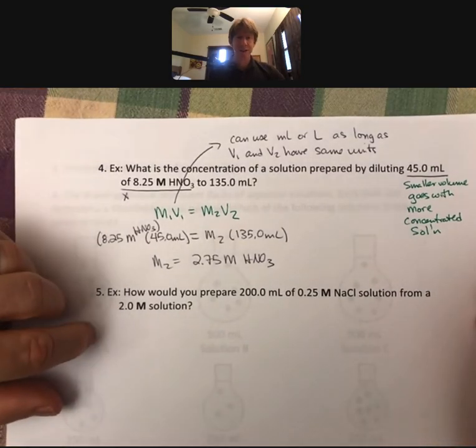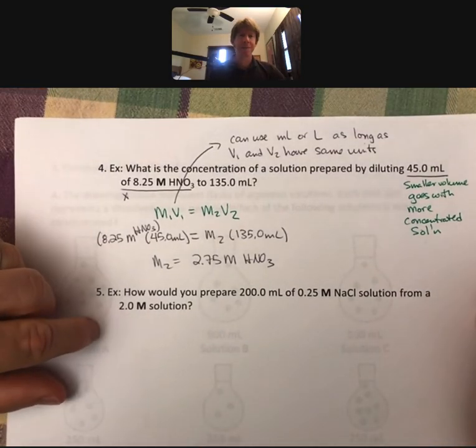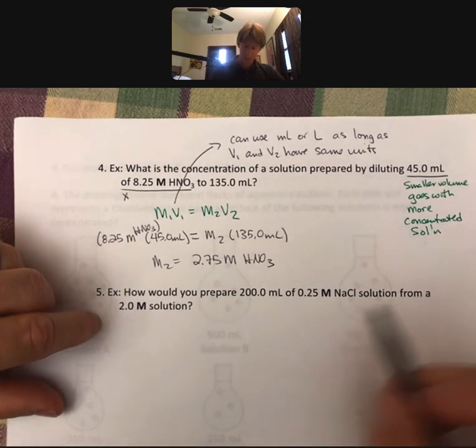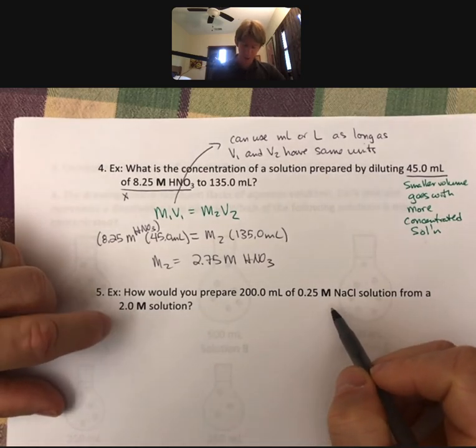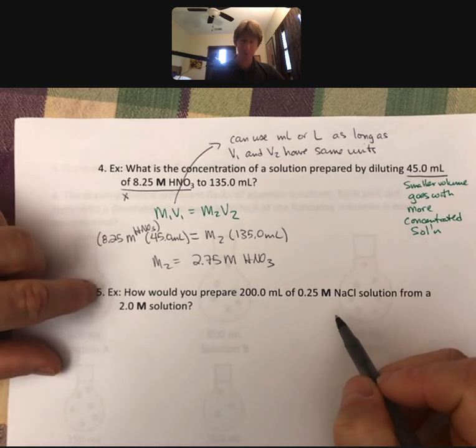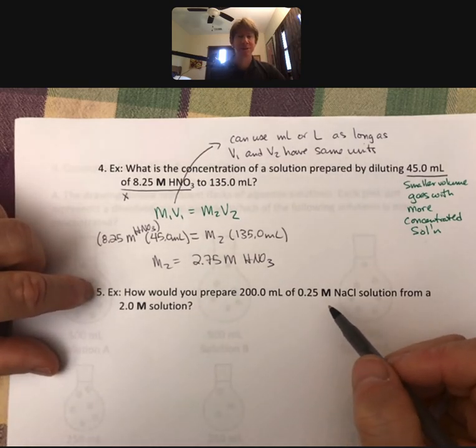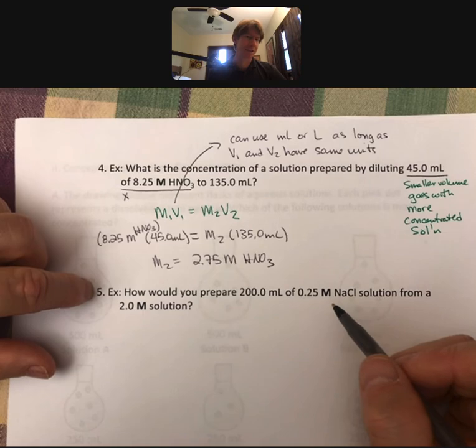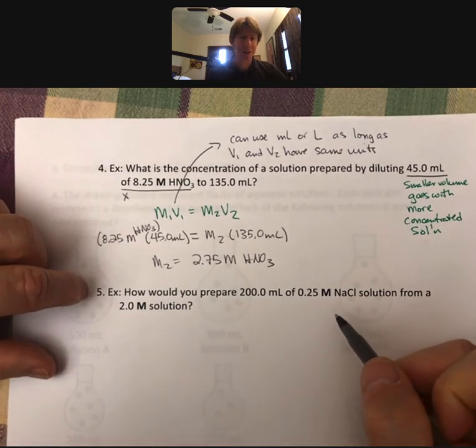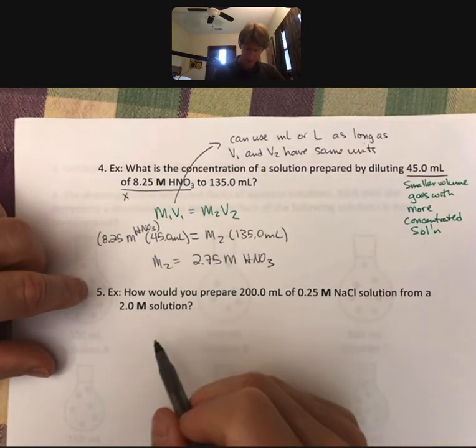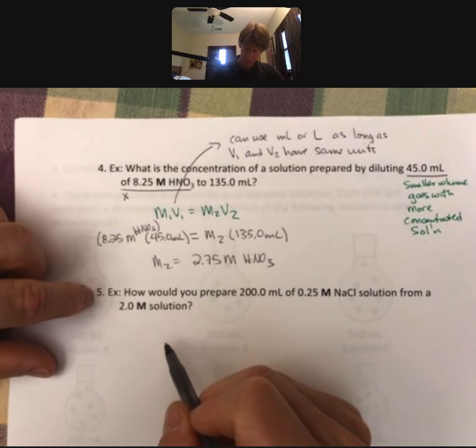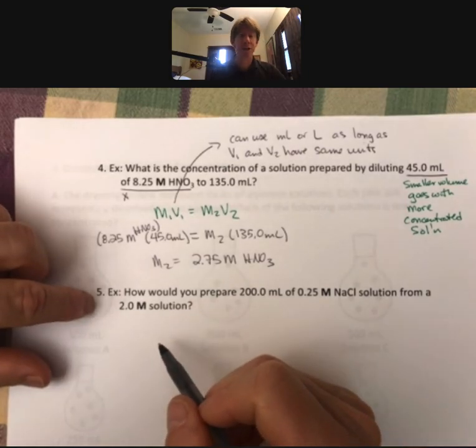I will let you do this solution here, and I will check it in the notes. When I check it, I'll be looking for the answer. It says, how would you prepare 200 milliliters? You don't have to write a paragraph. Just solve and find for me the volume of the more concentrated solution.